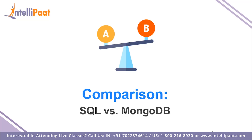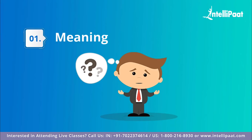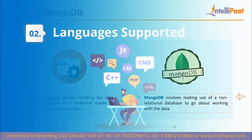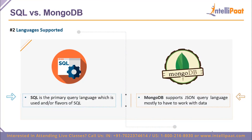Now for the quick comparison between SQL and MongoDB. The first point is meaning. SQL databases handle data using the relational model, which ensures that data is related to one another and can be accessed and worked with in a simple manner for storing and processing data. MongoDB, on the other hand, uses a non-relational, document-based database where data is not interlinked to each other.